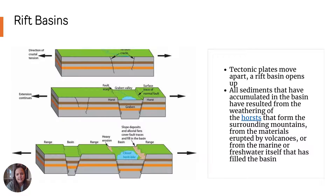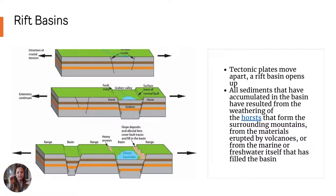In rift basins, as tectonics starts to shift things apart at a divergent plate boundary, we can get horsts and grabens. That is when we have normal faults that dip away and toward each other, creating these up-and-down developments of basins and ranges. Those grabens become basins where sediment can accumulate from nearby mountains — weathering weathers the mountain ranges and that sediment deposits in the basin.